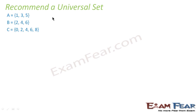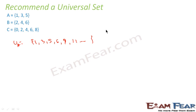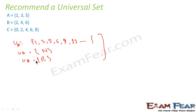Let's take one example. We are asked to recommend a universal set for {1, 3, 5}. The universal set can be any bigger set containing these elements. We can say the universal set is all odd numbers: {1, 3, 5, 7, 9, 11, …}. We can also say the universal set is all natural numbers, since 1, 3, 5 are natural numbers. We can also say it is all real numbers. There can be multiple valid universal sets for a given set — it is simply the bigger picture.